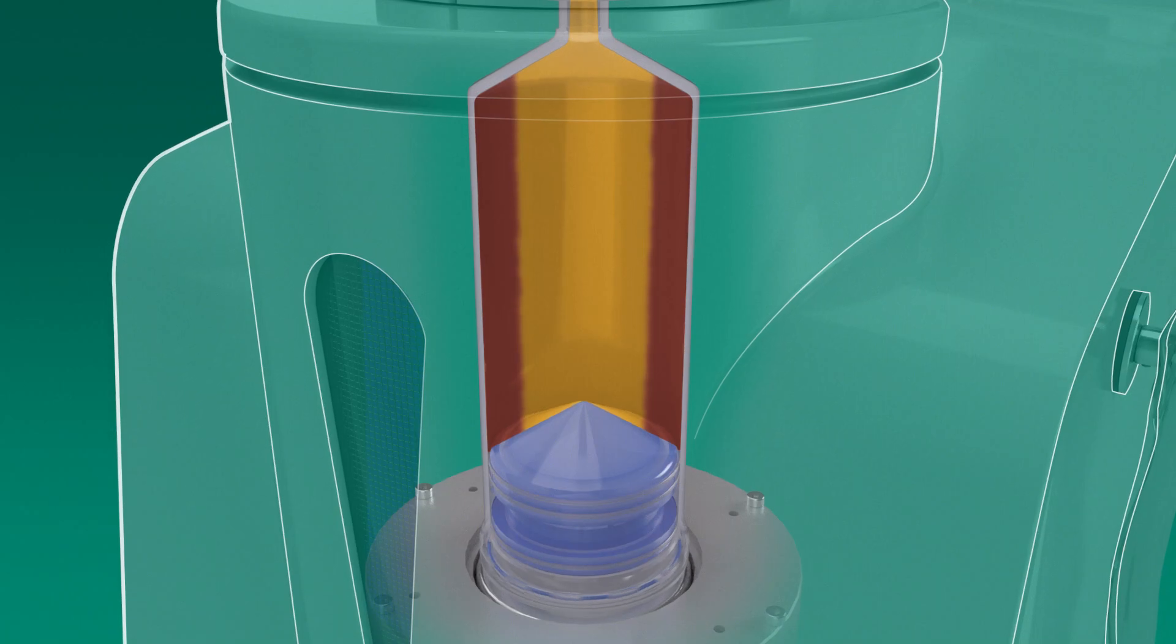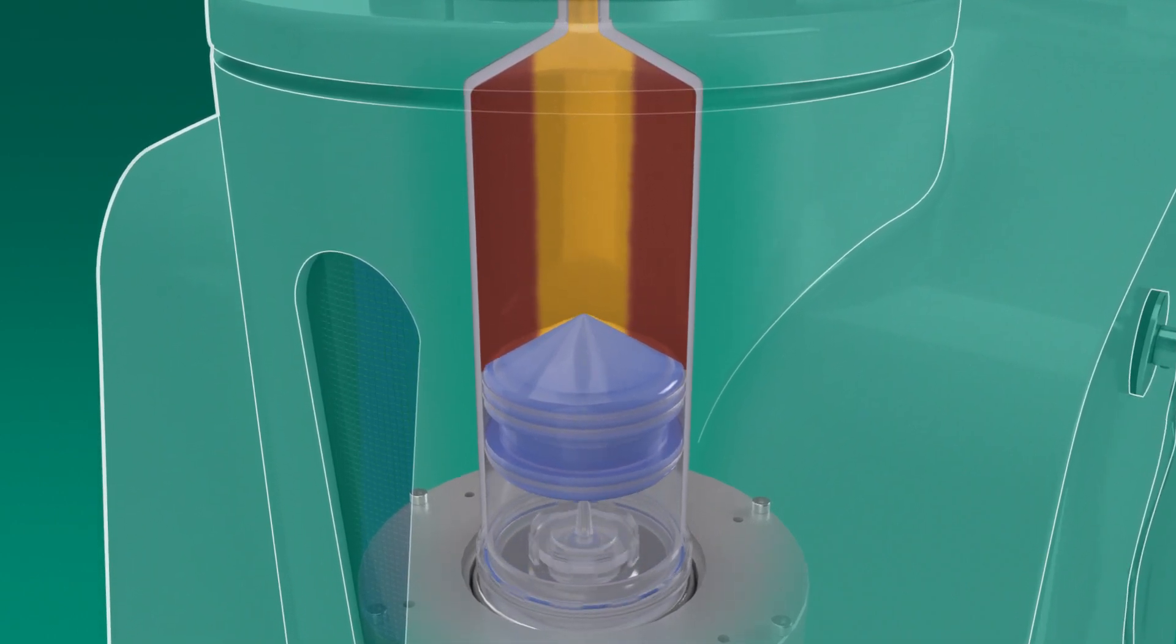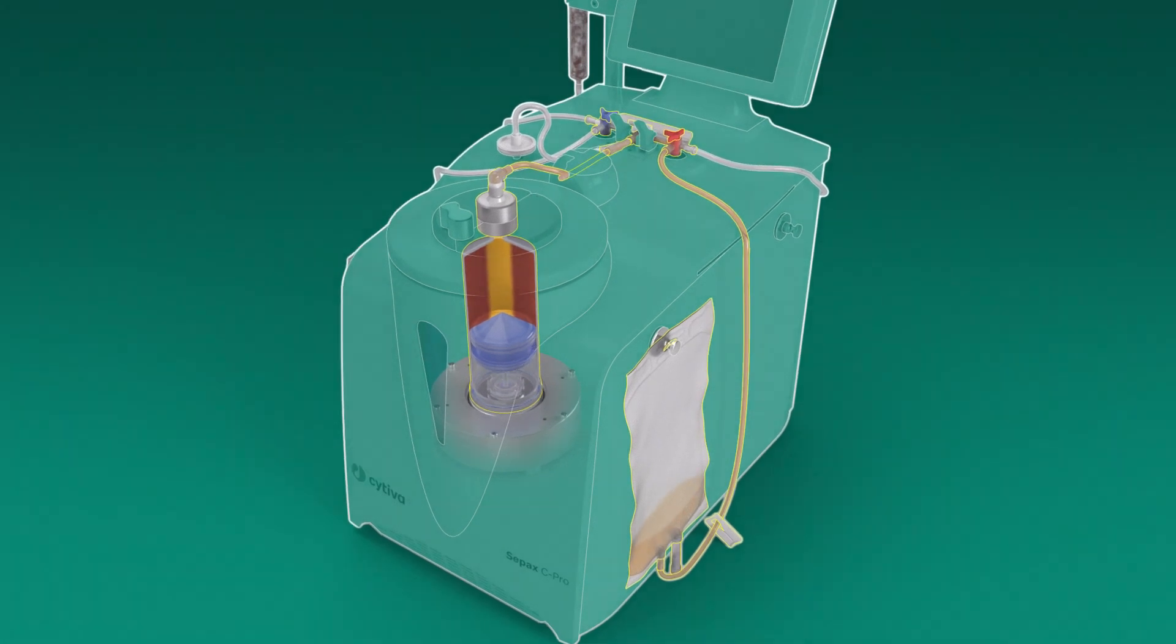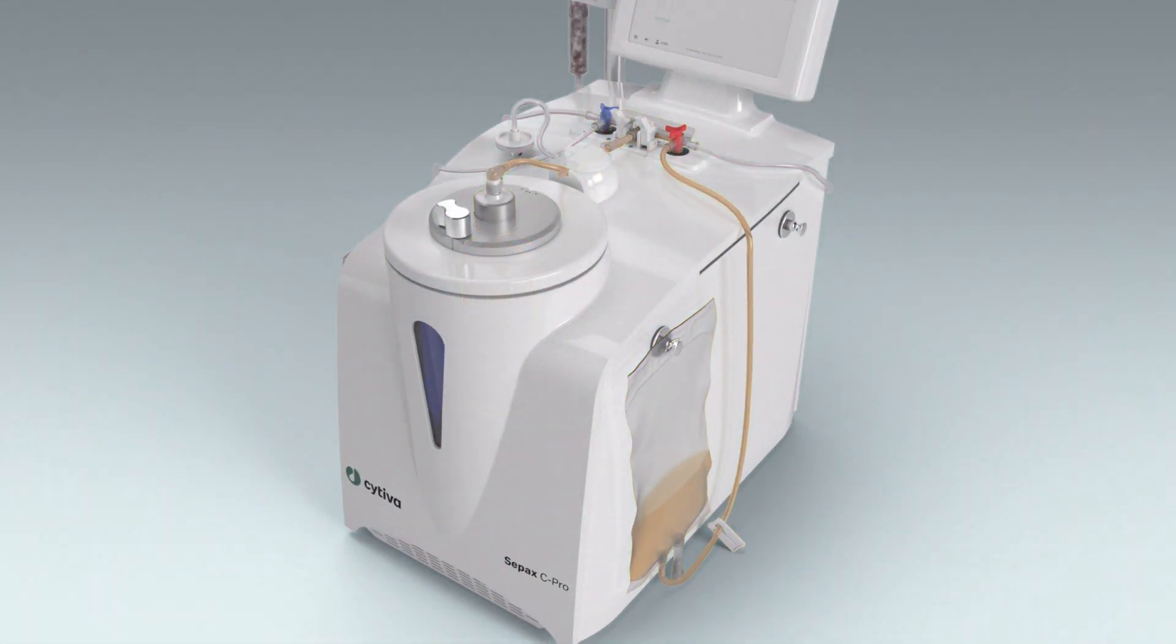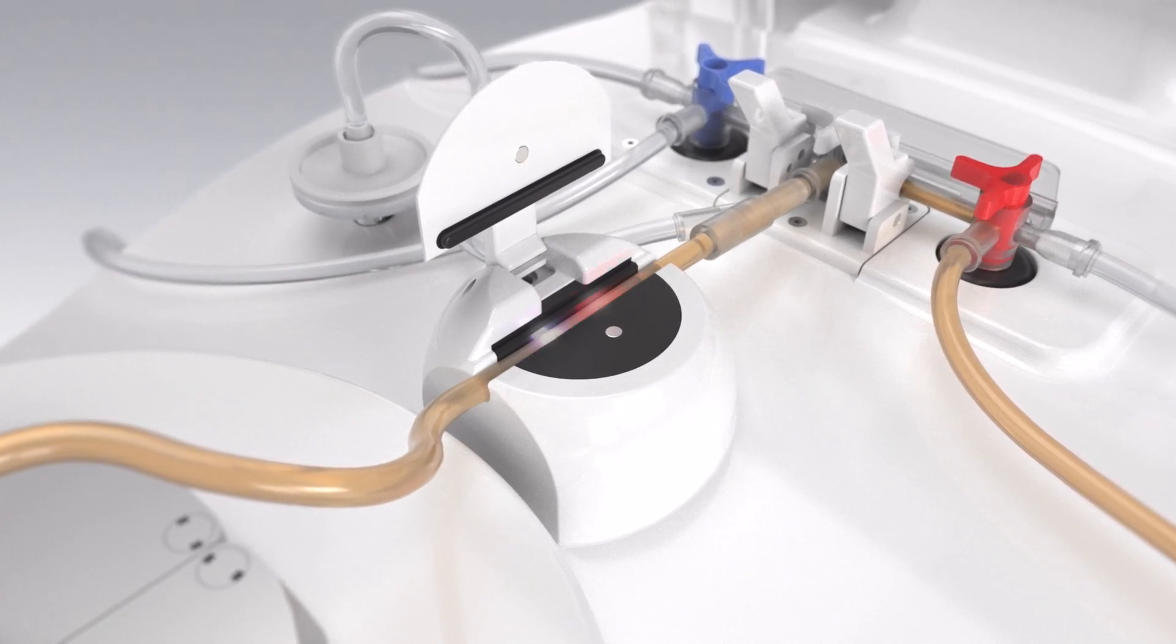The supernatant located along the spinning axis of the separation chamber is the first product extracted into the waste bag. The optical sensor detects what passes the optical line to monitor the process.